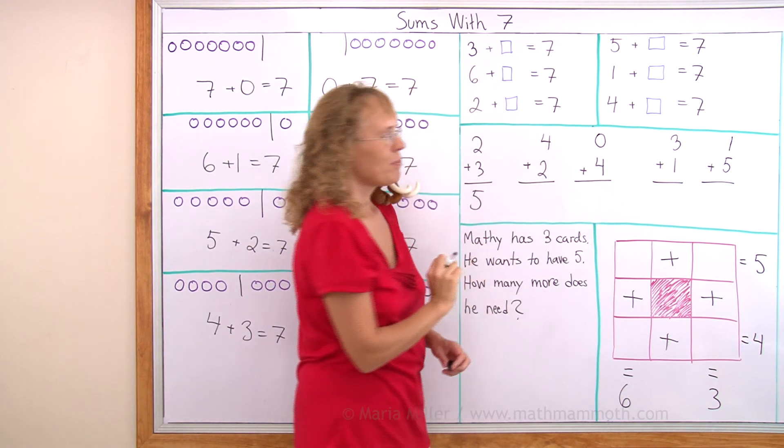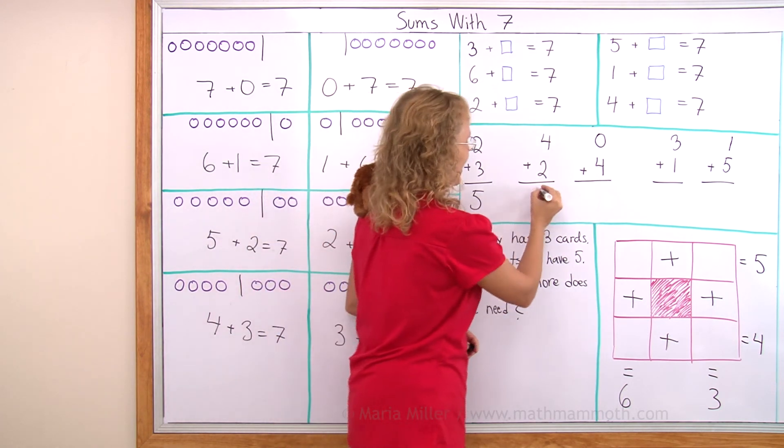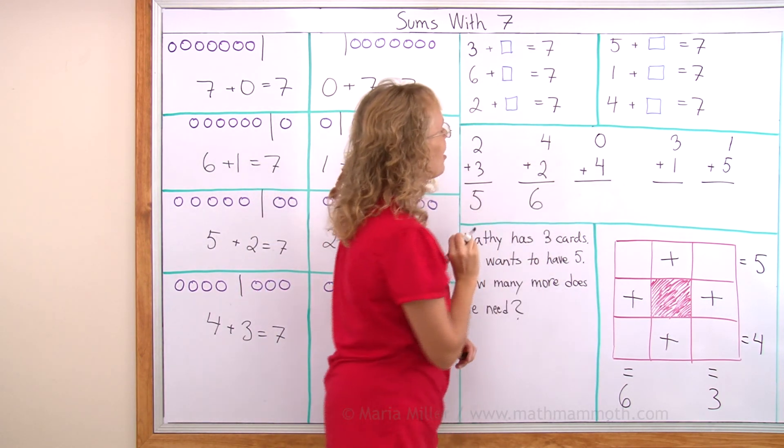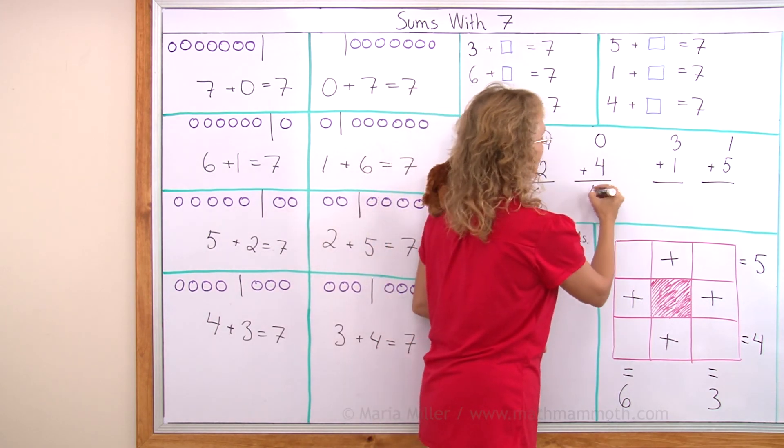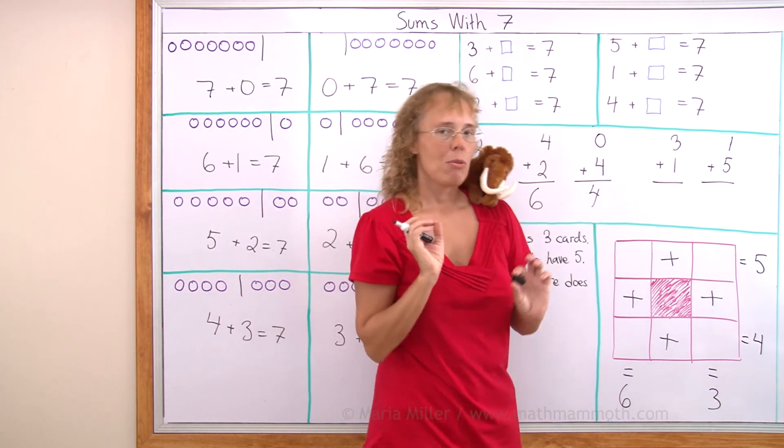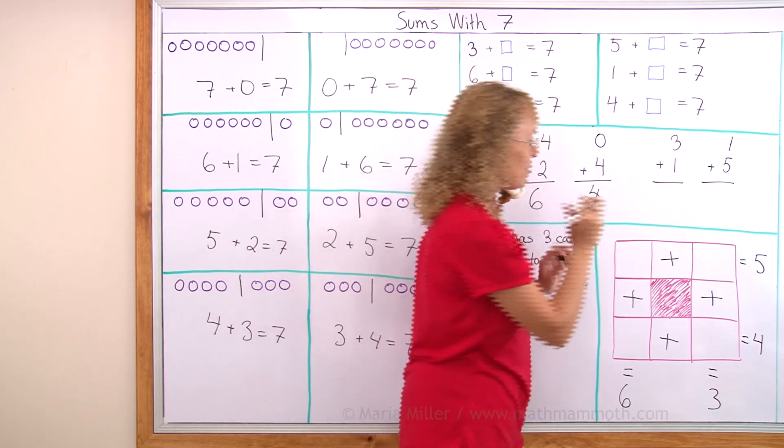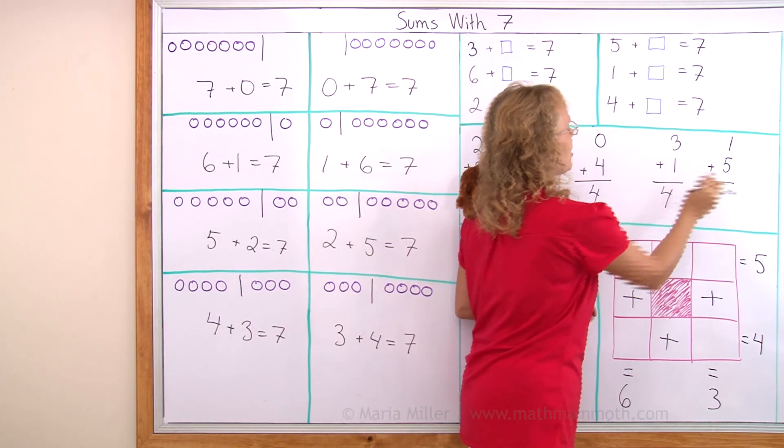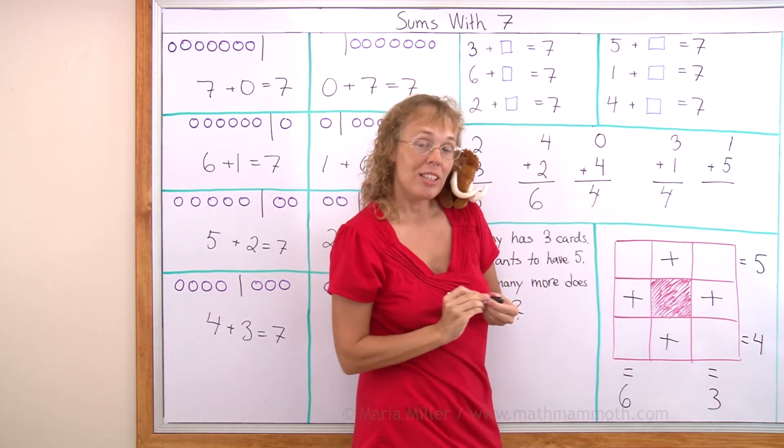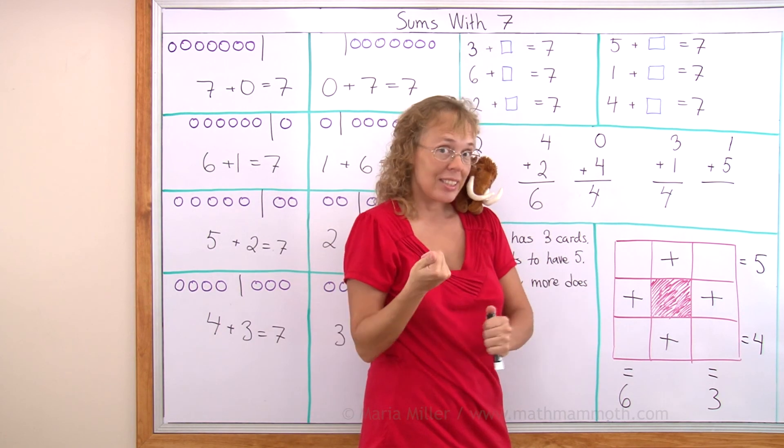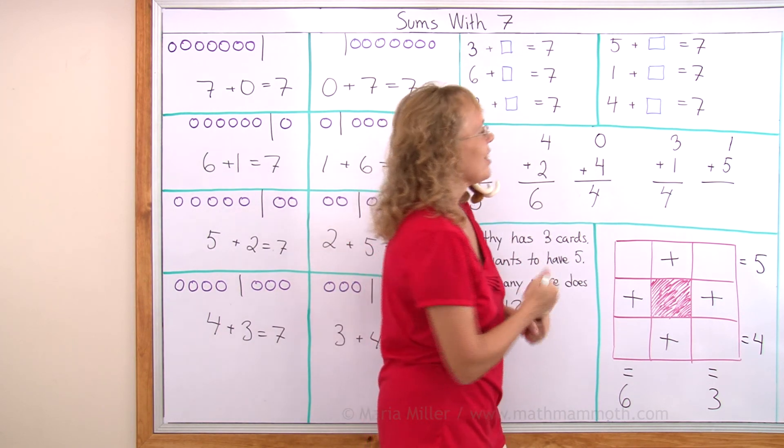Four plus two equals six. And then zero plus four equals four. And three plus one makes four. And then one plus five - do you remember that from sums with six? It is six.